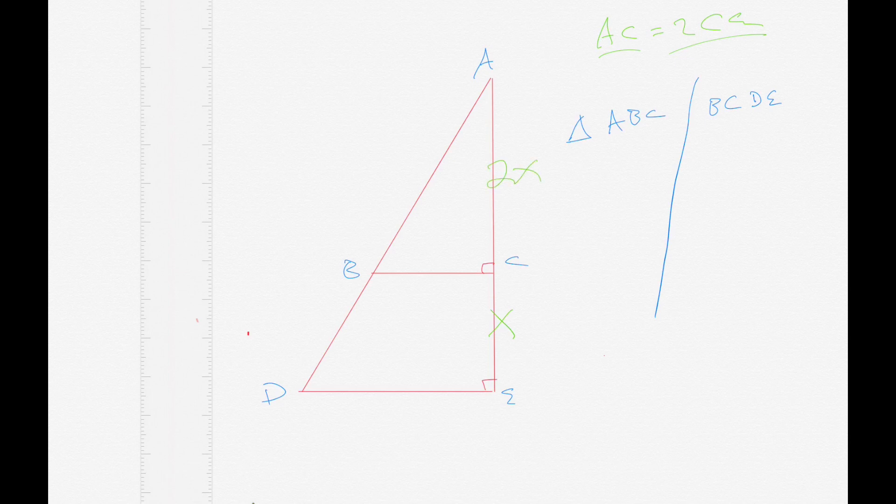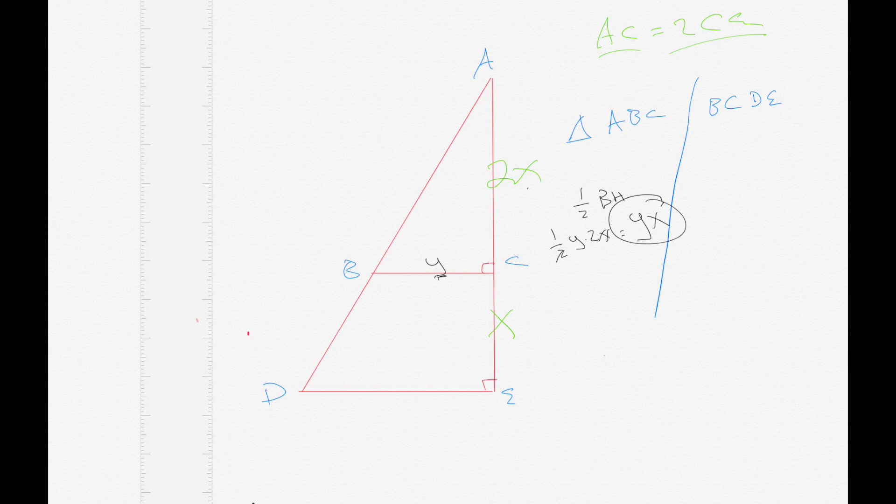At that point, we can calculate that triangle. If we call this down here Y, we could figure out the area of the triangle. The area of the triangle is 1 half base times height. So it would be 1 half of Y times 2X, which the 2's cancel out. So the area of the triangle would be Y times X. This is Y, and it's 2X. So the area of the triangle is Y times X.